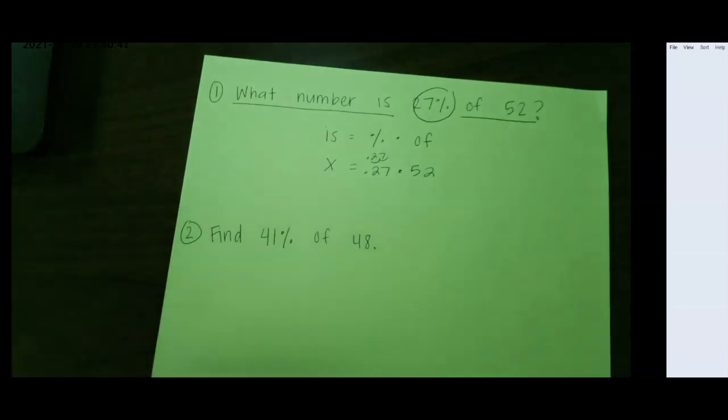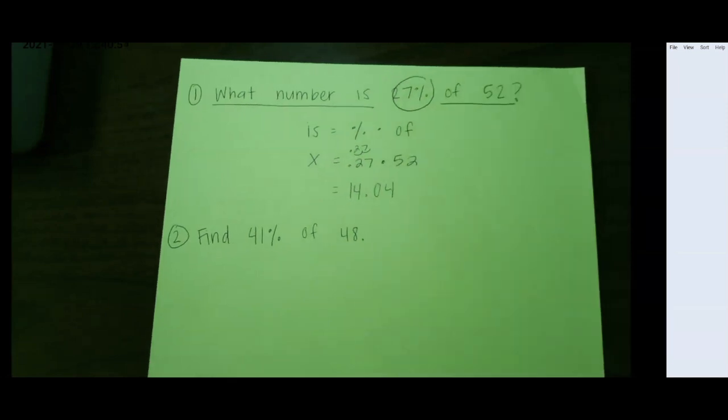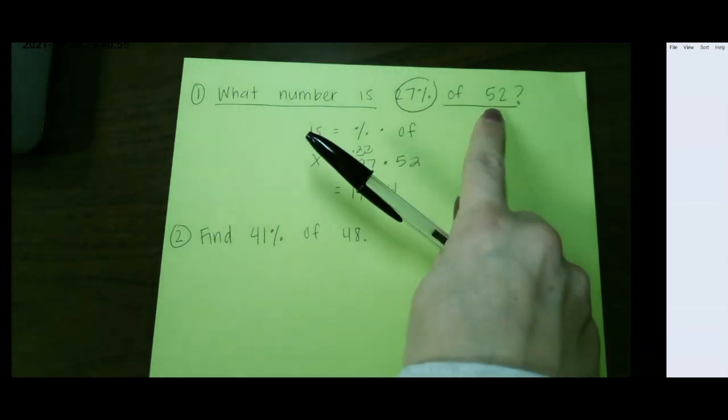So when we solve 0.27 times 52, that would give us 14 and 4 hundredths. So 14.04 is 27% of 52.